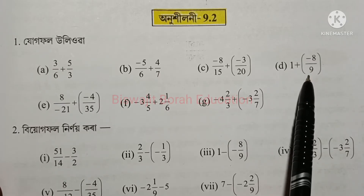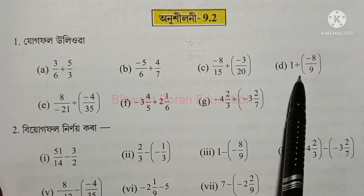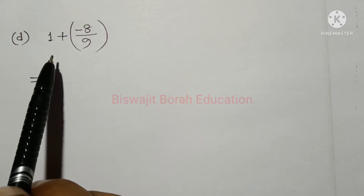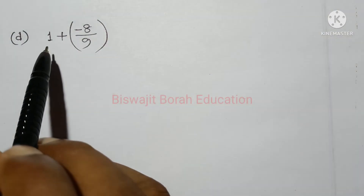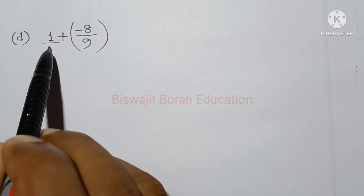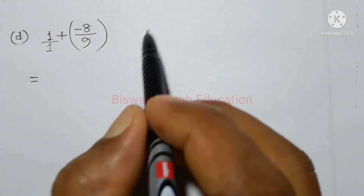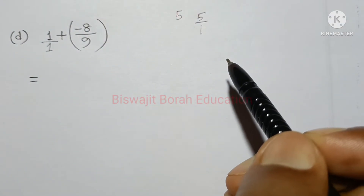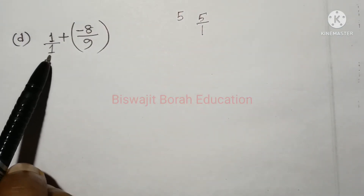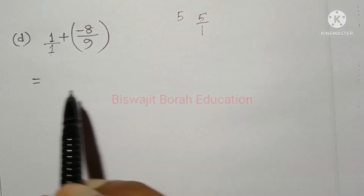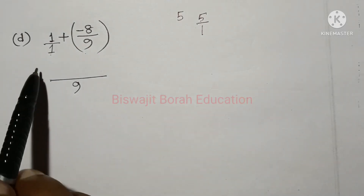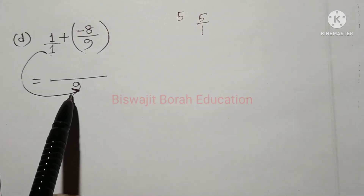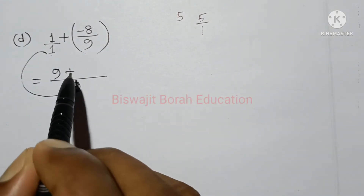1 plus minus 8 by 9. The calculation involves fractions. Plus it.